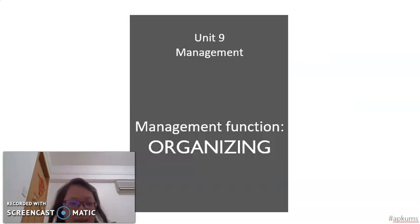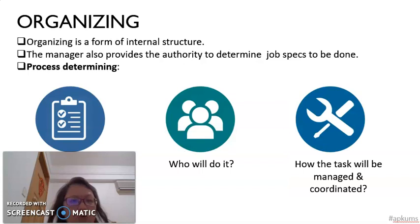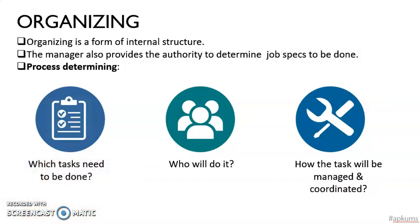I will start with explaining organizing, the second management function. For organizing, we are talking about how to organize the tasks and the people in the company. When we talk about organizing, the manager first has to determine which tasks need to be done within a certain period of time, or what is to be done. Second, who will do it? Who are the workers? What type of workers are suitable to do the job? And last, how the tasks will be managed and coordinated.